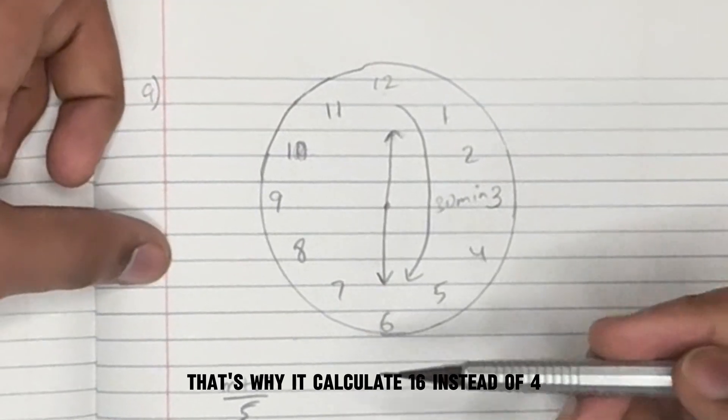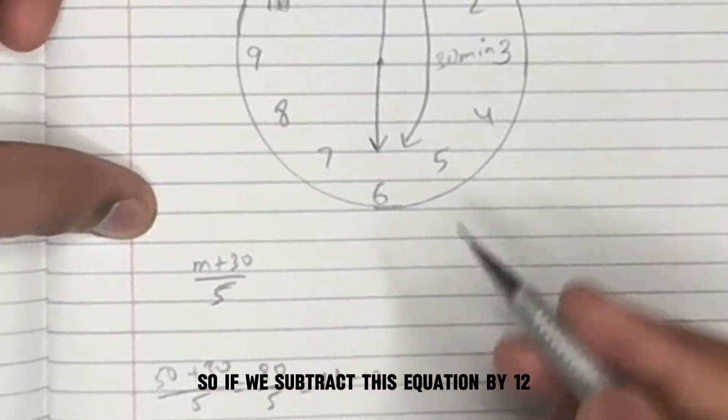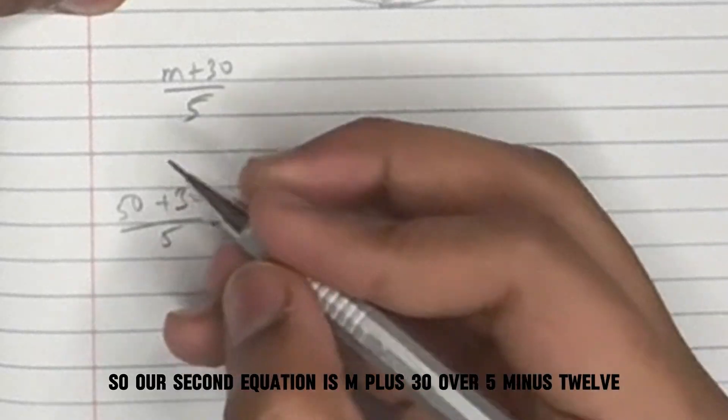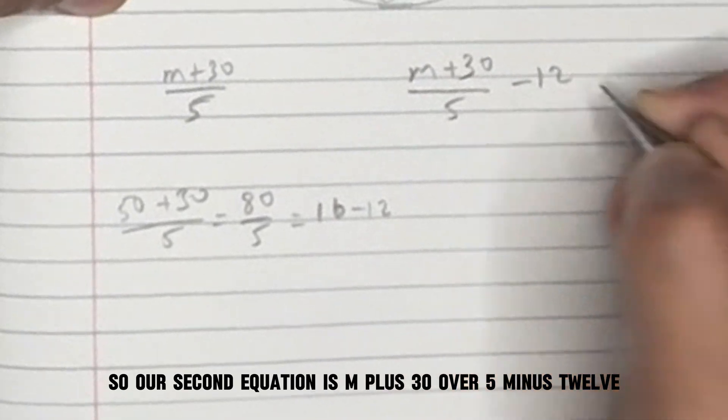That's why it calculated 16 instead of 4. So if we subtract this equation by 12, we will get the correct answer. So our second equation is m plus 30 over 5 minus 12.